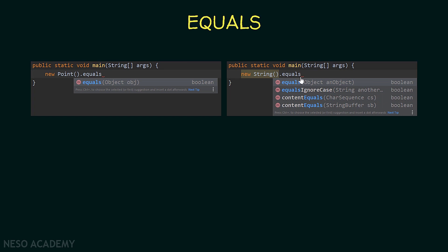So to use the equals method of the Arrays class on an array of objects, we should specify how we want to compare objects in the equals method of that object. The Java developers have already specified how to compare strings and points. But if we create our own class, we will write our own equals method and specify how we want to compare objects of that class. We will talk about this later. For now, all you need to know is: there is an equals method for objects that specifies how to compare objects of the same type, and the equals method of the Arrays class uses this equals method to compare arrays of objects.